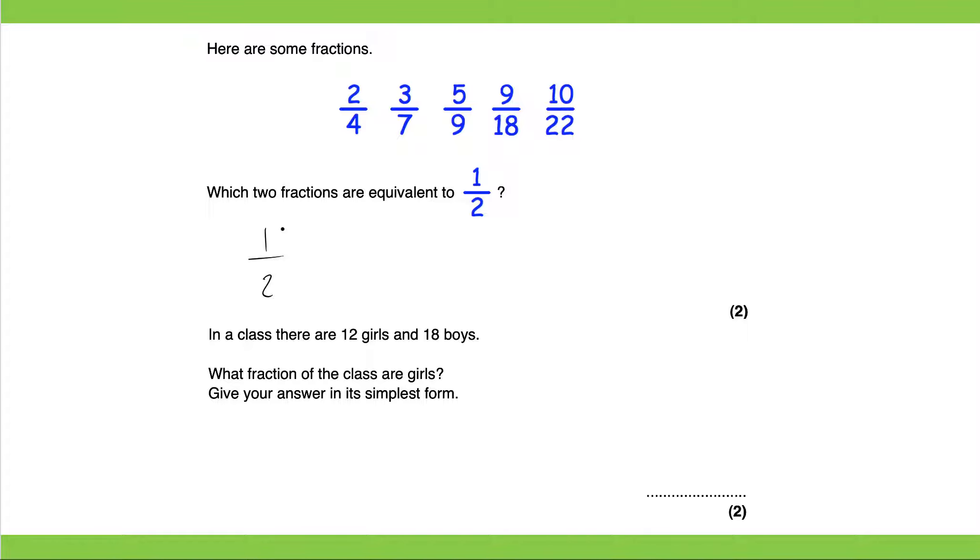Remember, a half is equivalent so the numerator is half the denominator. So let's circle the numbers where the numerator is half the denominator. So two quarters, nine eighteenths, and those would be our two fractions which are equivalent to a half. So two quarters and nine eighteenths and that will get you two marks.